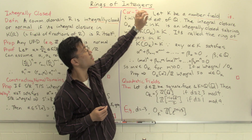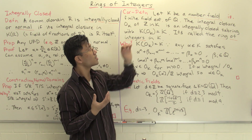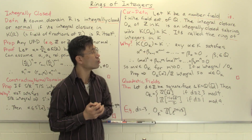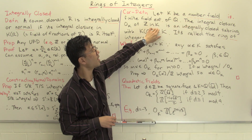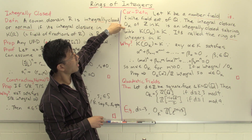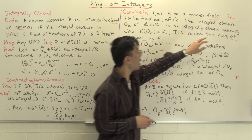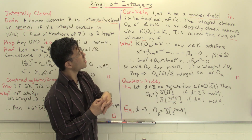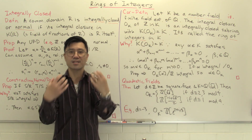That gives us the following definition. Number theorists are often interested in finite field extensions of Q — these are called number fields. So let K be such a finite extension of Q. We construct a subring of K: the integral closure of Z inside K, denoted O_K. This is an integrally closed subring whose field of fractions equals K itself. It's called the ring of integers inside K. We've seen this in the special case where K is the Gaussian rationals Q(i), where it gives just the Gaussian integers.